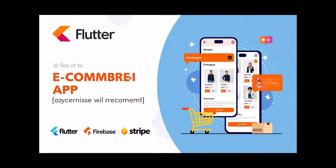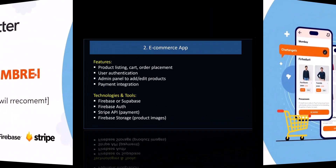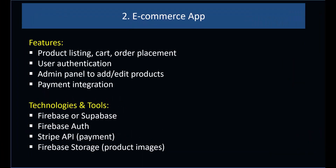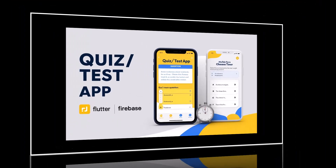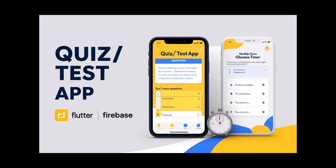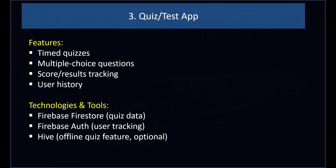Number 2: E-commerce App. Features: product listing, cart, order tracking, and user history.